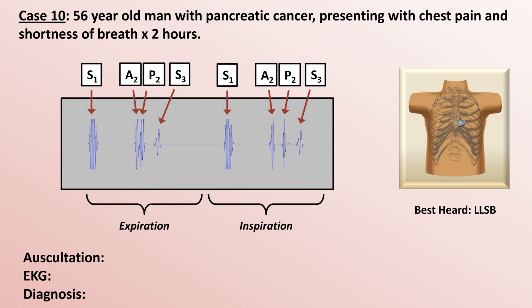Furthermore, it's a little unusual that the S3 is loudest over the lower left sternal border instead of the apex. Although the location of a heart murmur has only fair agreement with the responsible valve, S3 and S4 tend to localize very well — when caused by a left ventricular problem they are usually loudest over the apex. Therefore, an S3 at the lower sternal border is suggestive of a rare right-sided S3.